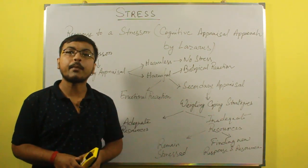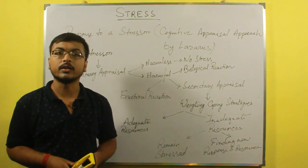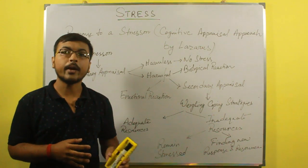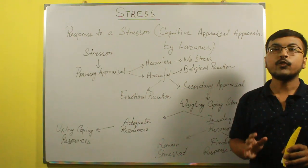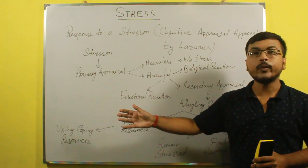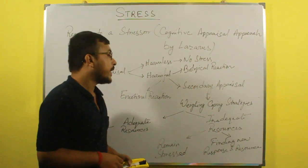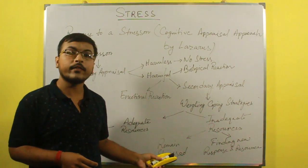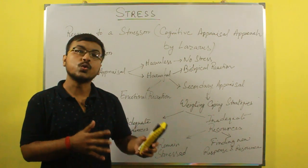The next reaction is secondary appraisal. In this secondary appraisal, we find out our resources. The third one is emotional reaction: anger, fear, depression, grief, rage, shame, etc. In the process of secondary appraisal, if we find adequate resources to cope with the stress, then we use coping strategies to reduce our stress level. If we have inadequate resources, then the stress level remains, or we find out new resources or responses to the stressor.